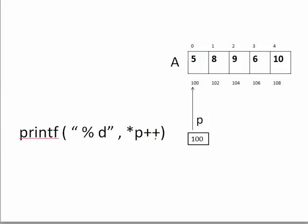The next operation is *P++. Reading right to left: the ++ is post-increment on the pointer, so it will not be done right away — it will be done after the end of the expression. So first the dereference * is performed on P, reading the value 5. After the expression ends, P then increments and moves to the next integer.